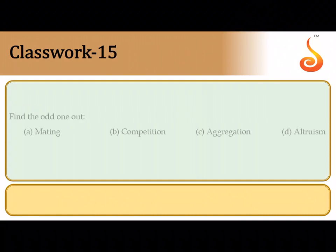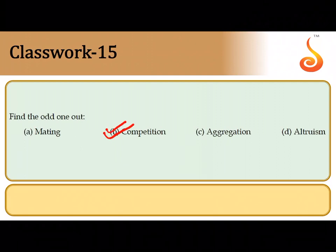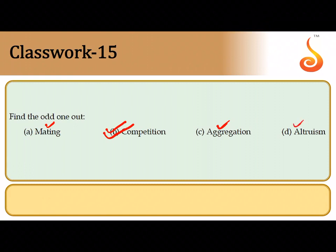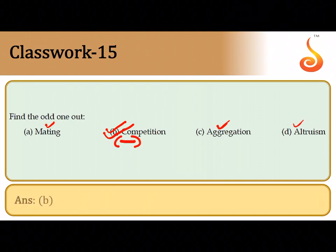The last question asks for the odd one out among: mating, competition, aggregation, and altruism. Mating, aggregation, and altruism are all positive cooperative interactions — they ensure continuity of species or survival during lean periods. Competition, however, is a negative interaction and not a form of cooperation. So competition is the odd one out. With this, we complete the practice questions for all three chapters in this week's crash course.